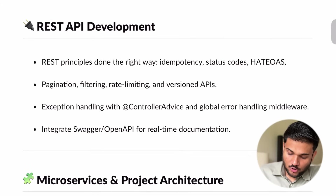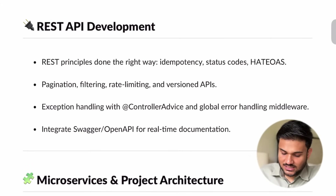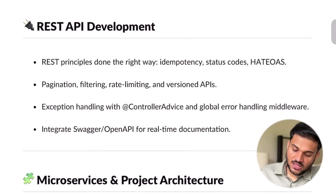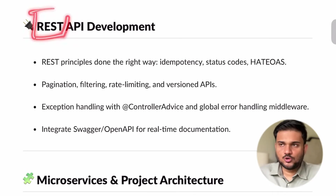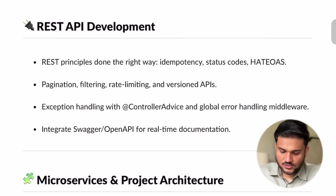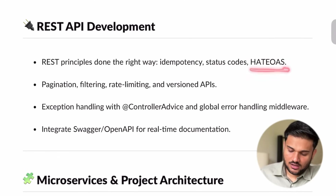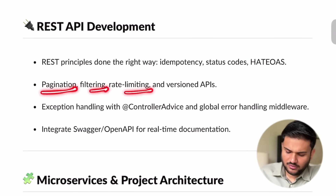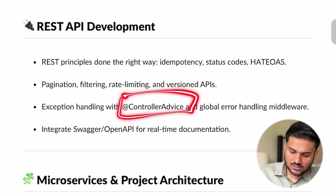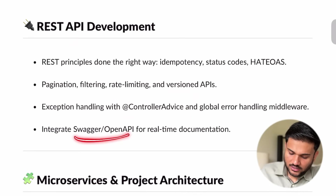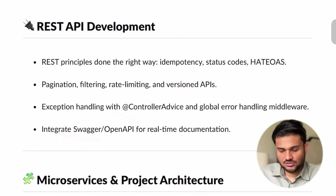Then we are going to talk about REST API development. We are going to see how exactly REST APIs are developed — what are APIs, why do you need APIs, why REST is one of the most profound ways of writing APIs, and what is HATEOAS altogether. Pagination, filtering, rate limiting — we are going to see all of this. There is a concept of controller advice, and we'll try to integrate documentation through Swagger.